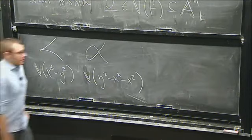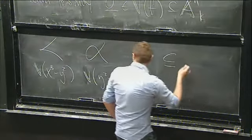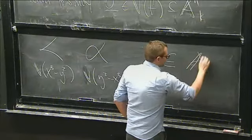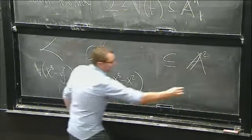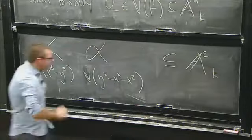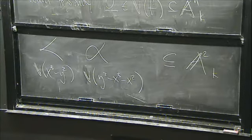So let's say the standard cusp or the standard node — these are examples of plane curves. Now, it was mentioned in the previous talk that all of these pictures involve some kind of a lie. We were working over the complex numbers, but I only drew the real points.